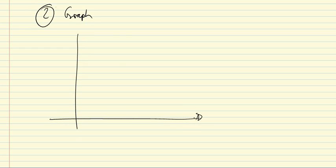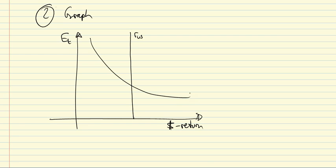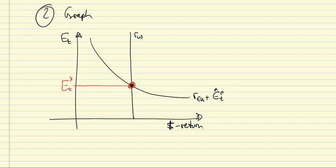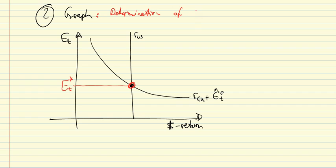Combining the two curves — the vertical US line and the downward-sloping EU expected return curve — we get our equilibrium graph, with E_t on the vertical axis and the dollar return on both assets on the horizontal axis. The intersection of these two curves is the equilibrium of the foreign exchange market, which determines our E_t*. The whole no-arbitrage condition underlying UIP ultimately gives us exchange rate determination.